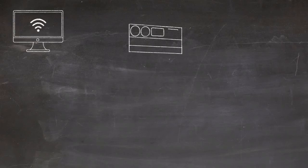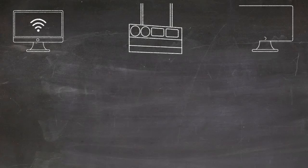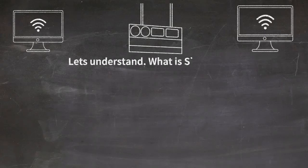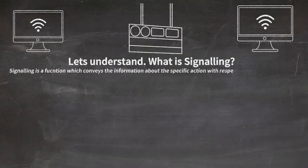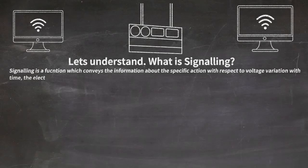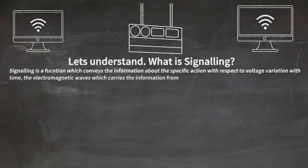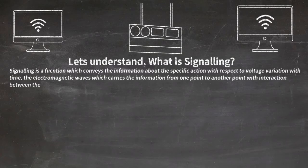Different devices are connected with the help of signaling because signaling is mainly responsible for connecting the devices. Signaling is a function which conveys information about a specific action with respect to voltage variation, bit timing, and electromagnetic waves which carry information from one point to another point with interaction between network elements.